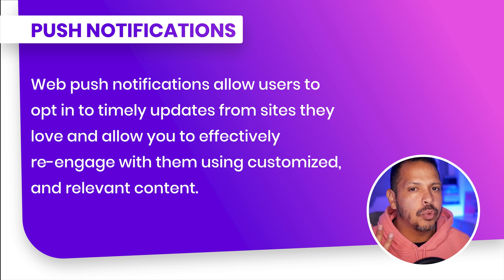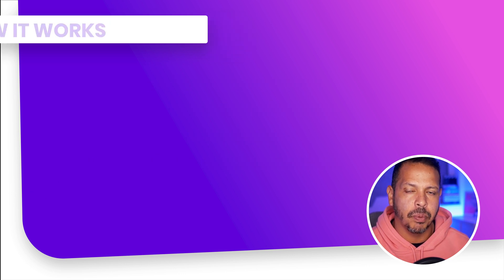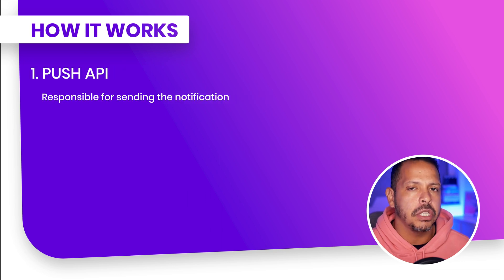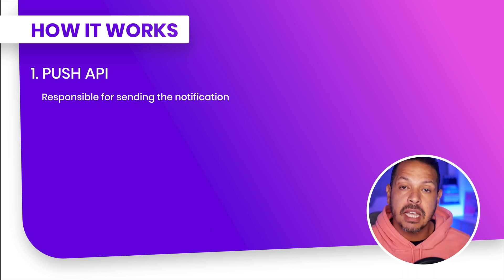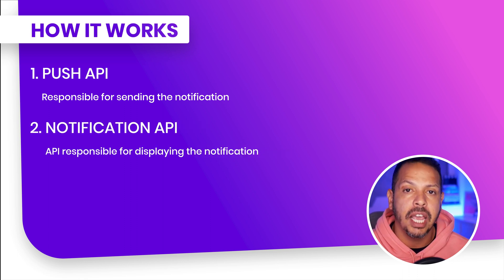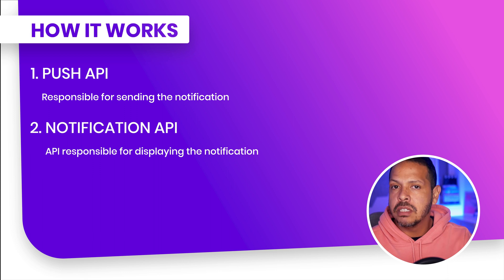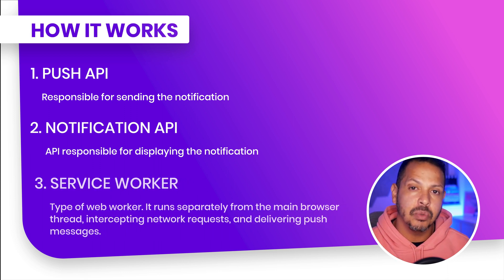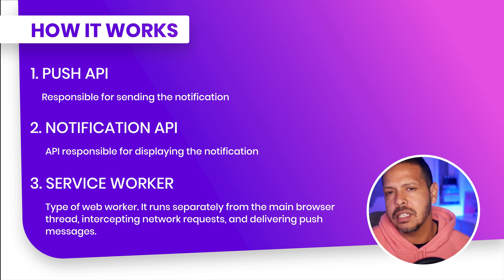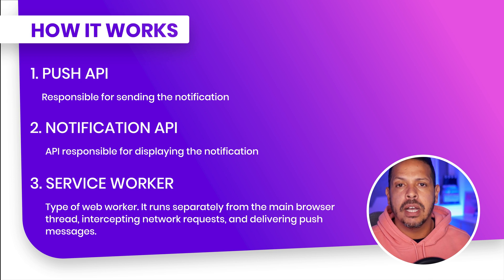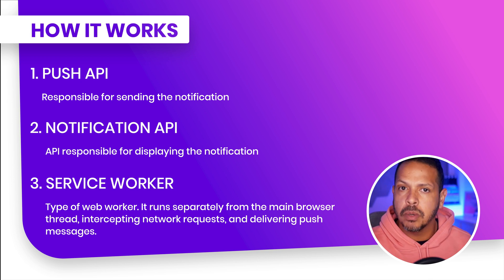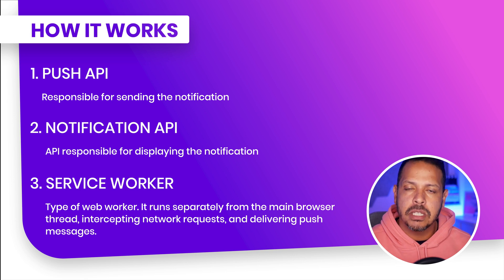We need to understand that there are three items involved in that process. The first one is the Push API, which is responsible for sending that information. The second one is the Notification API, which is responsible for displaying the message to the user. And the third one is the service worker, which works as a web worker where we intercept any requests and is also responsible to receive the notification and notify the browser when that message arrives.